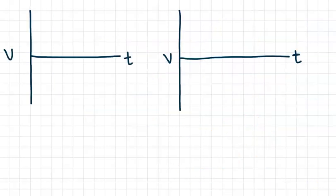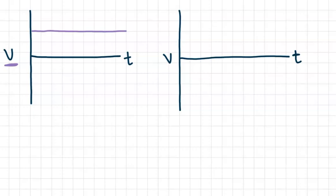Now we're going to move on to velocity-time graphs. These are a little bit more challenging because we're not as used to drawing these out. The first scenario, we have a horizontal line, and that is going to show us not a constant position, but a constant velocity. Our velocity is on the y-axis, and that value is not changing as time progresses. If we put the line in the bottom quadrant, the only difference is that it's moving in the opposite direction — still constant, same magnitude, but in the negative direction.